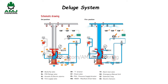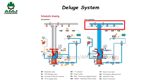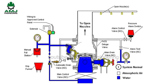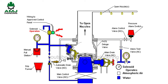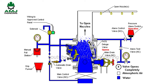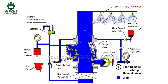Deluge systems are similar to pre-action systems in that they use another type of detection for operation. However, the biggest difference is that deluge systems use open sprinklers or nozzles. Instead of getting water flow from individual heads that have operated, once water fills the system, water will flow from every sprinkler head. A deluge valve will keep water from filling the system until the operation of another detection system, such as smoke detection. Once the detection system is activated, water flows from all open sprinklers or nozzles.